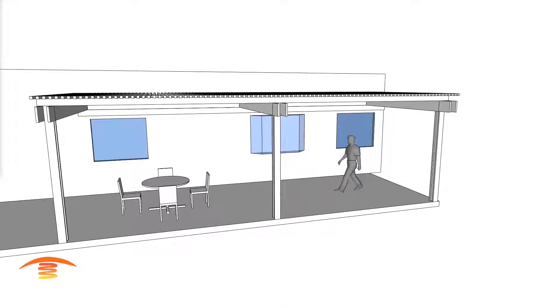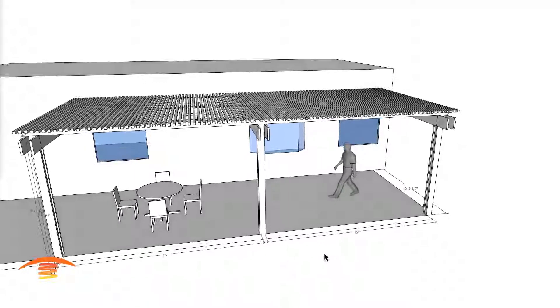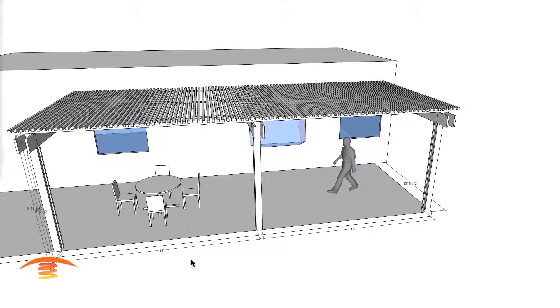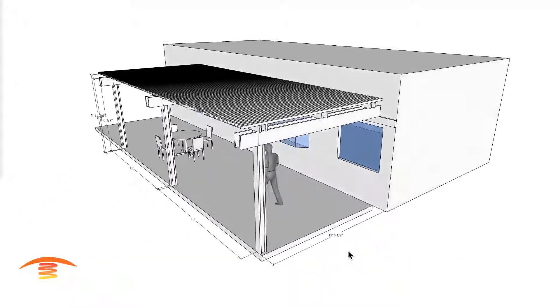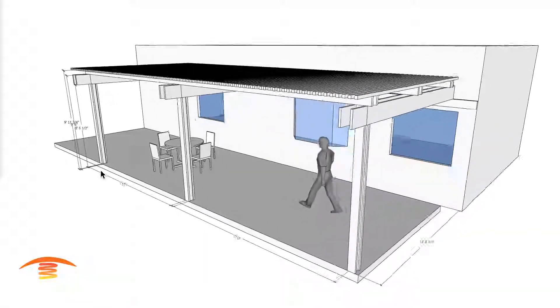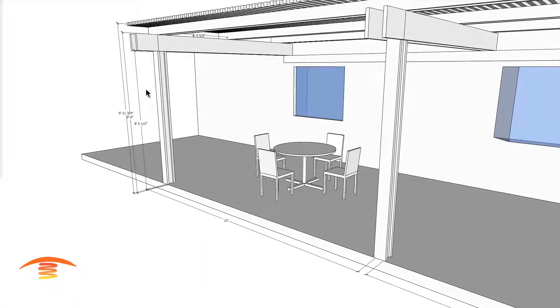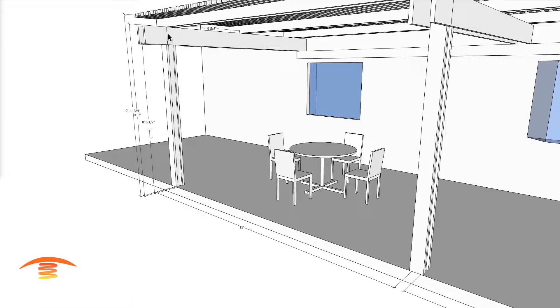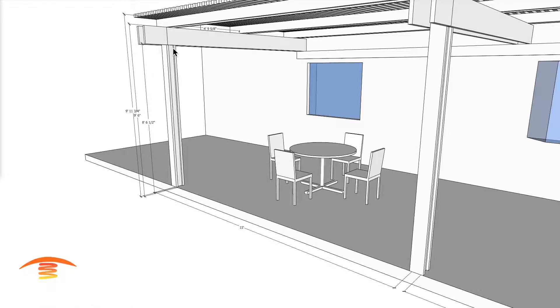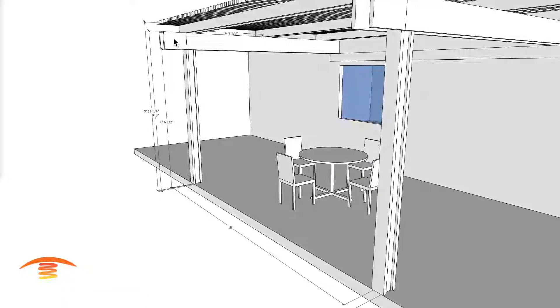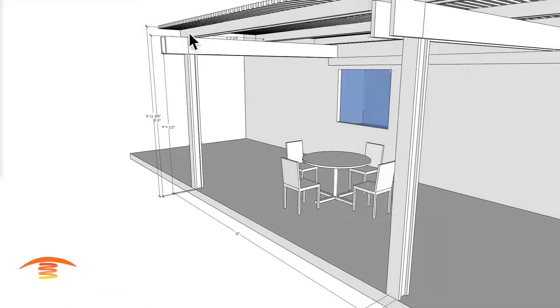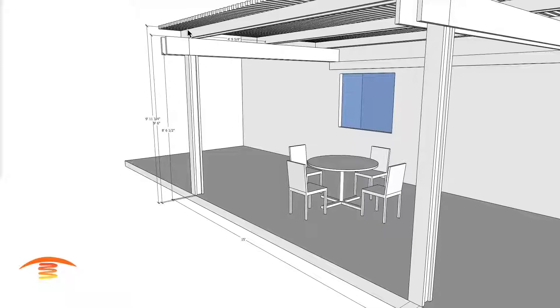So let's go ahead and go right into the dimensions here. Basically I have 30 feet and a few inches going left to right, 12 feet deep, and then we have a couple of different elevations. At the bottom edge I have 8.6, at the top edge I have 9.6, and at the bottom of the lattice pieces I have 9.11.